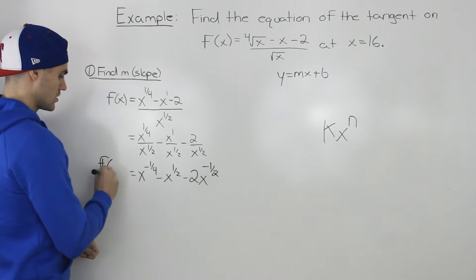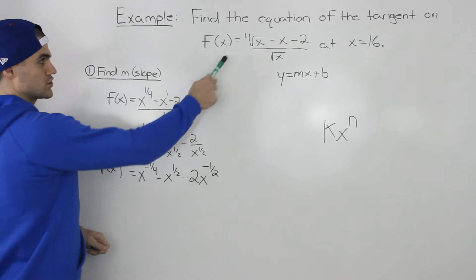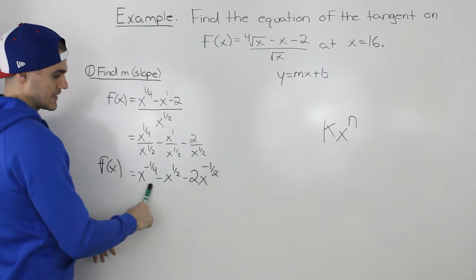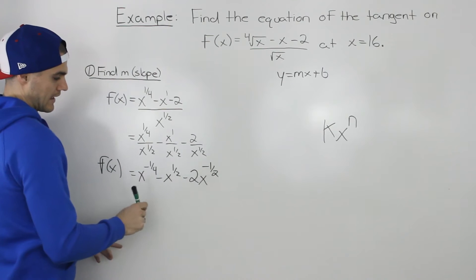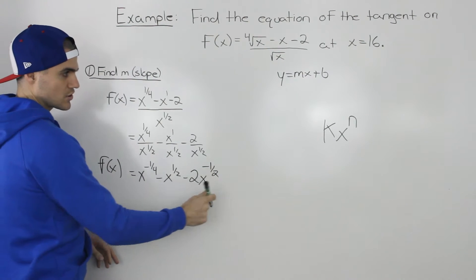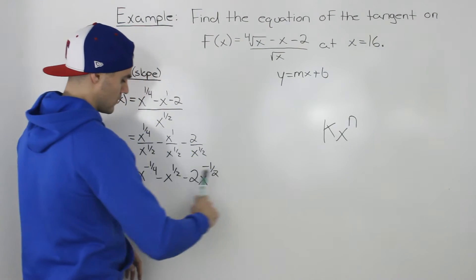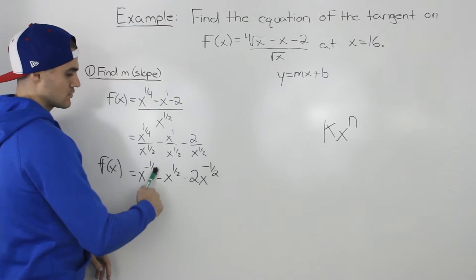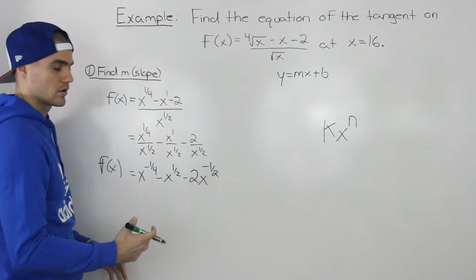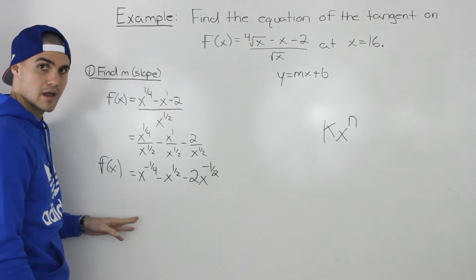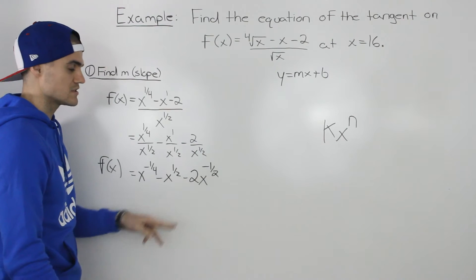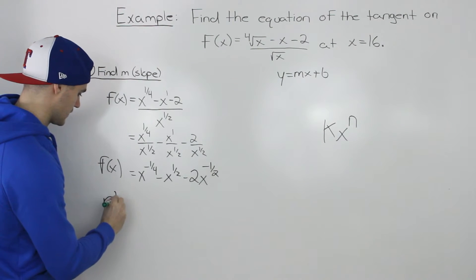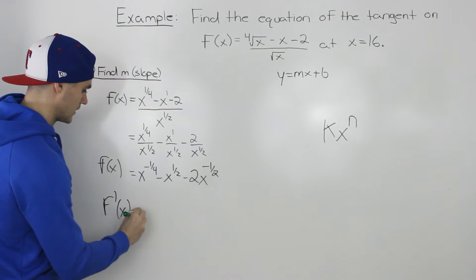So we took the original function and manipulated it to get each term in the form k x to the n — constants in front and all x's raised to a power. Now we can smoothly find the derivative by applying the power rule to each of these terms.